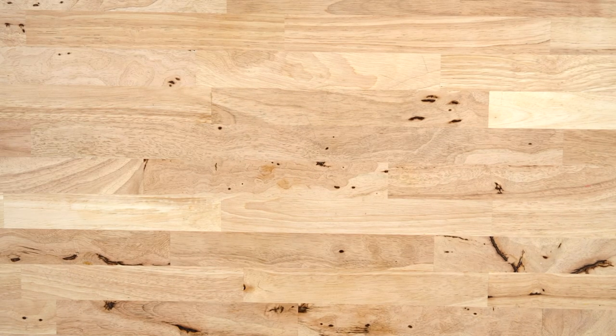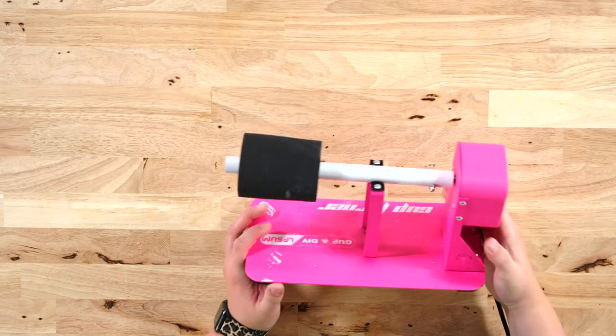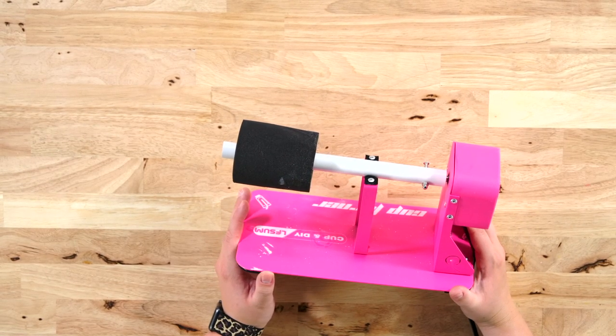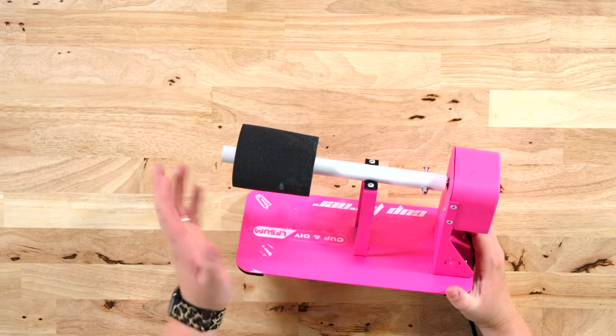Speaking of UV resin, we use our tumbler turner constantly. It's always running, it feels like, here in the studio making tumblers.